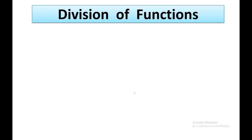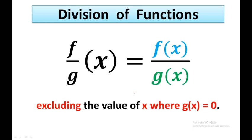Now the division of functions. Let f and g be functions. Their quotient, denoted by f over g, is the function (f/g)(x) = f(x)/g(x), excluding values of x where g(x) equals 0.